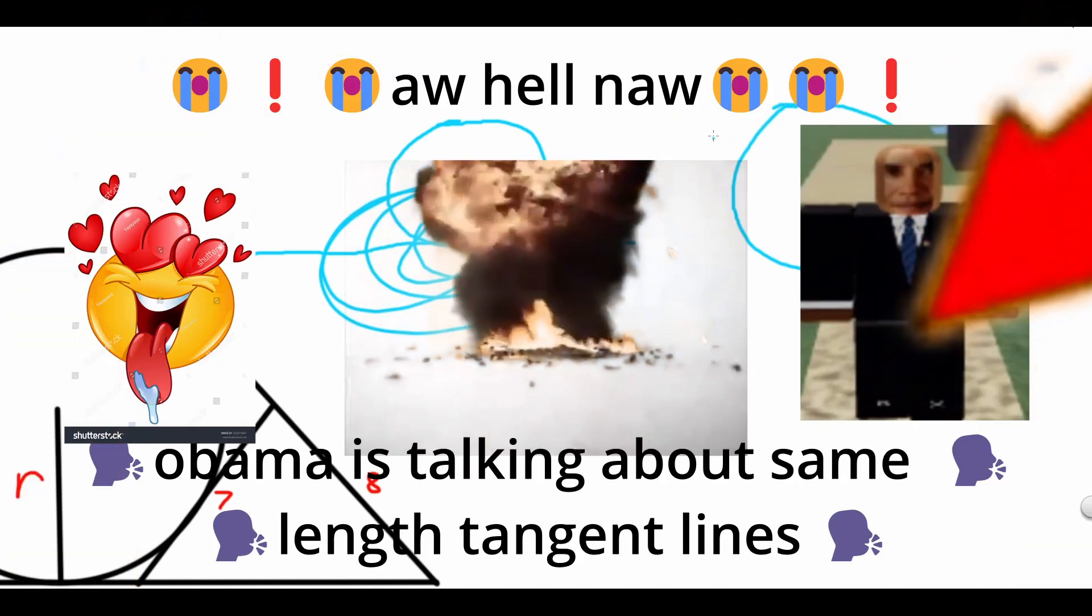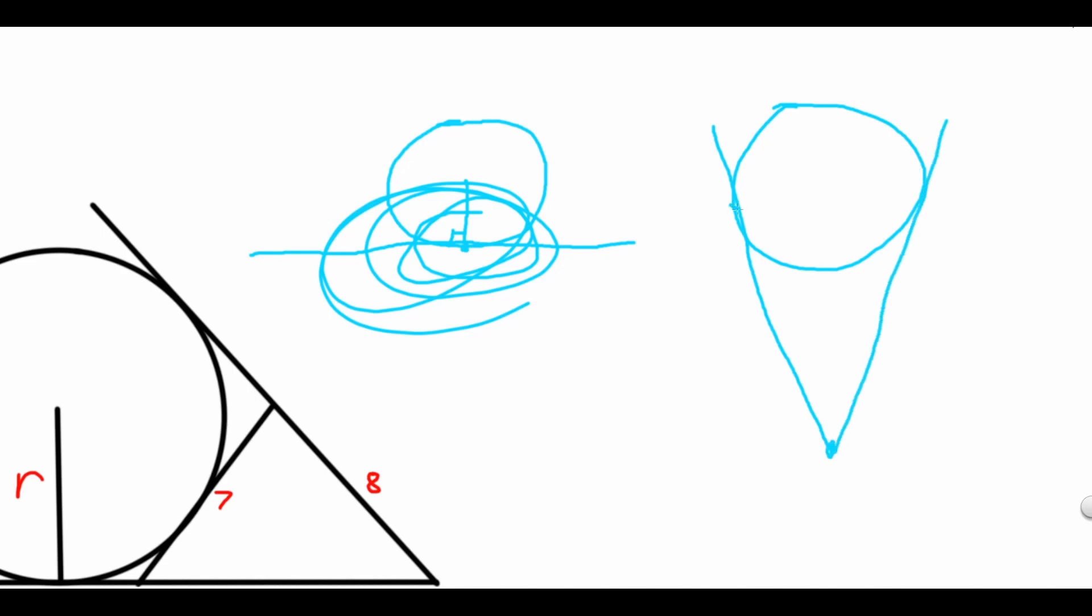The point outside of the circle will always have two tangent lines to the circle, and these two lines are the same length.